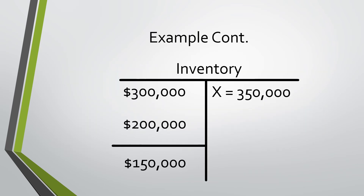In this example, the ending inventory is $150,000. What is Bella Beauty's cost of goods sold based on the information above? I again chose to solve this using a T-account. I put in my beginning inventory plus my purchases, and then I found my ending inventory. If you add beginning plus purchases minus ending, that will give you your cost of goods sold of $350,000.